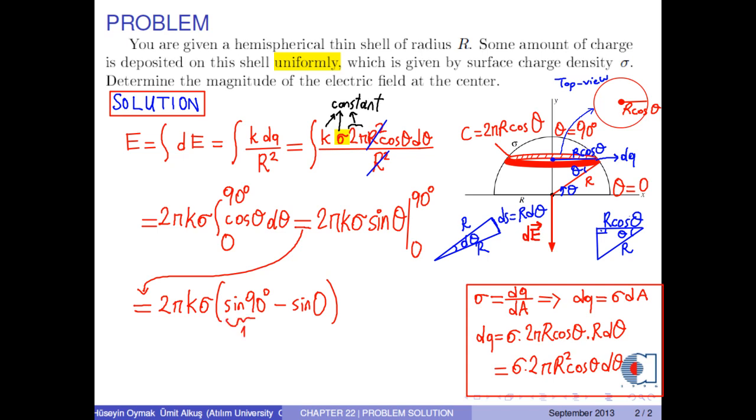Here, sine 90 degrees is 1 and sine 0 is 0. As a result, we obtain the electric field at the center as E equals 2 pi k times sigma.